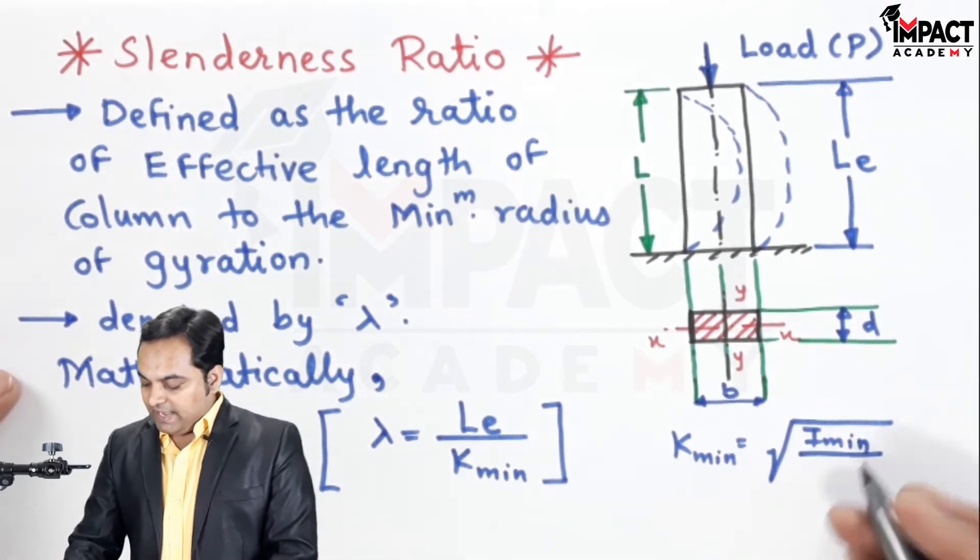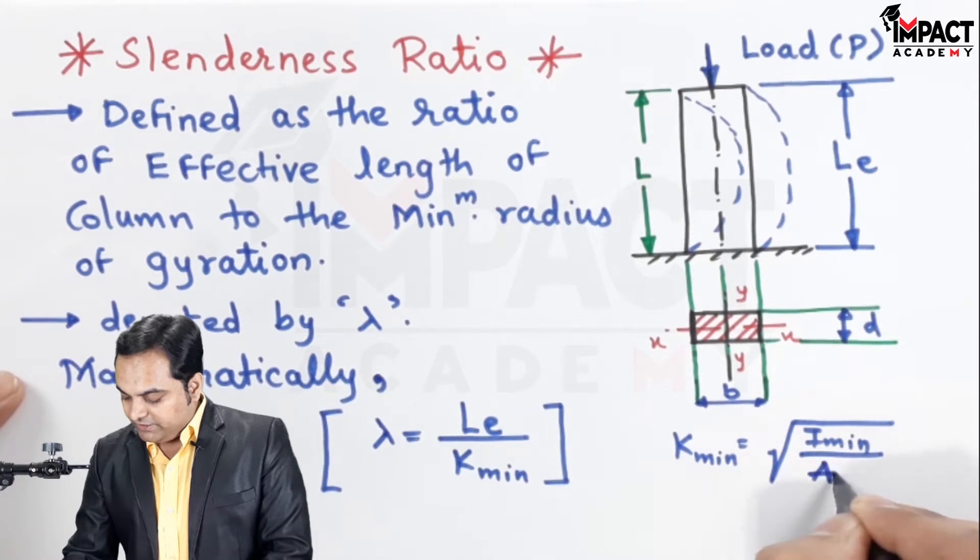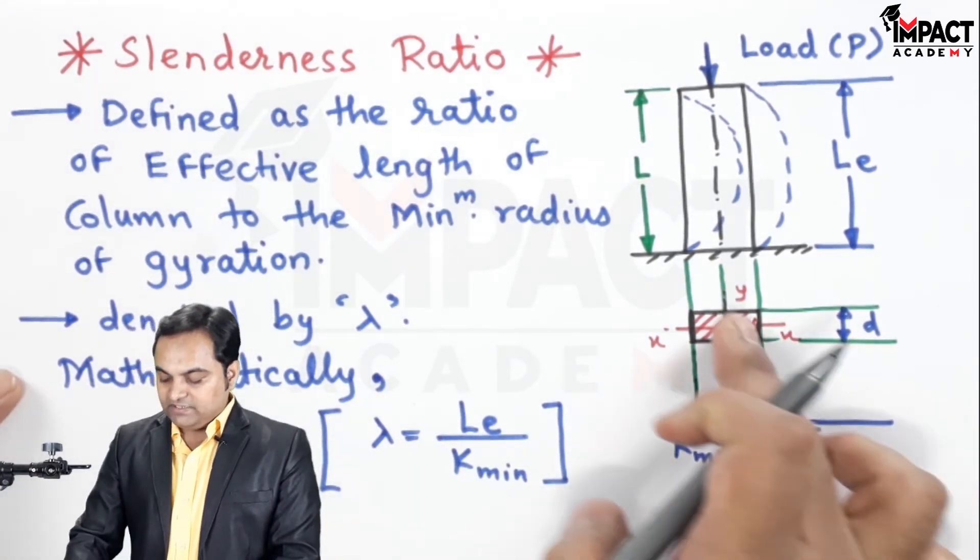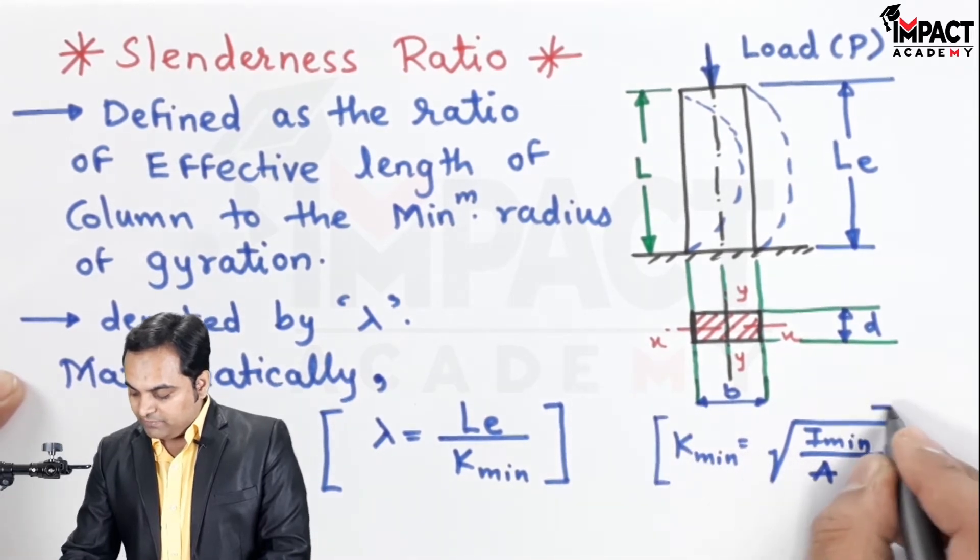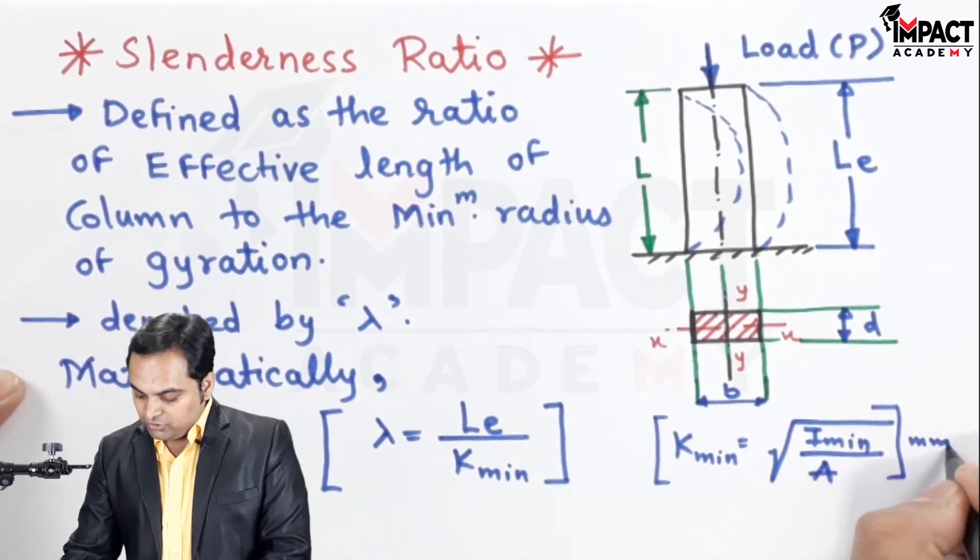If we calculate IXX and IYY, the minimum value has to be selected. That I minimum divided by area, and the root of that value where area is the cross-section area of the column, would give us K minimum, the minimum radius of gyration.